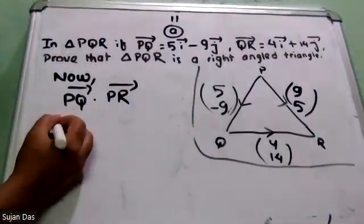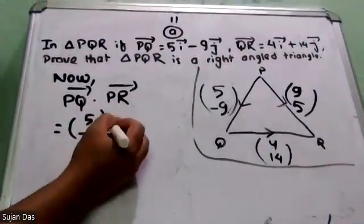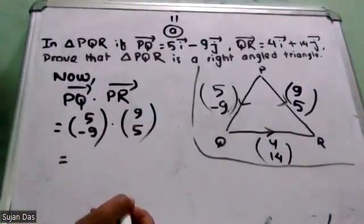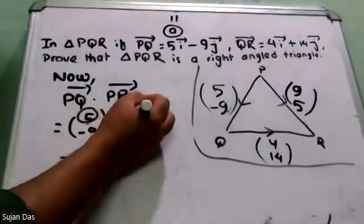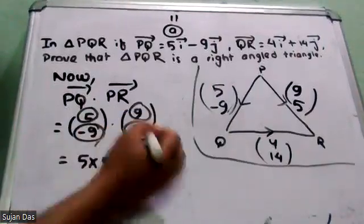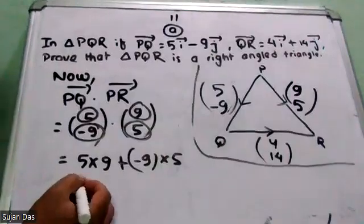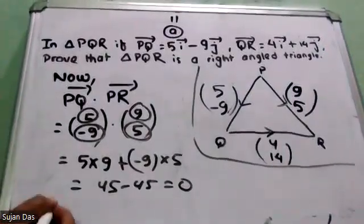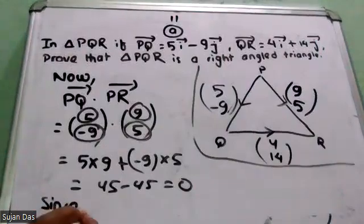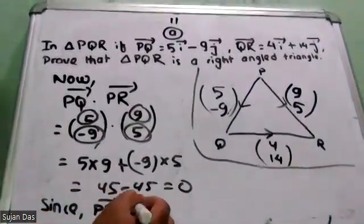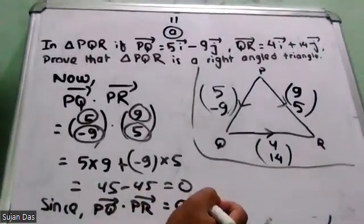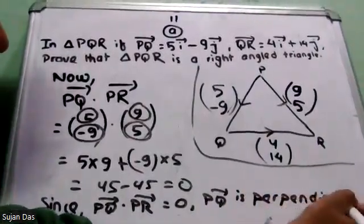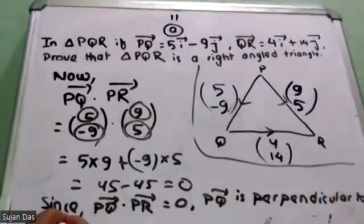So what is PQ vector? 5 minus 9. What is PR vector? 9, 5. So this is the dot product — matthiko into matthiko. So 5 into 9, plus matthiko into matthiko: minus 9 into 5. So 45 minus 45 equals 0. Your dot product equals 0. Since PQ vector dot PR vector equals 0, PQ vector is perpendicular to PR vector.